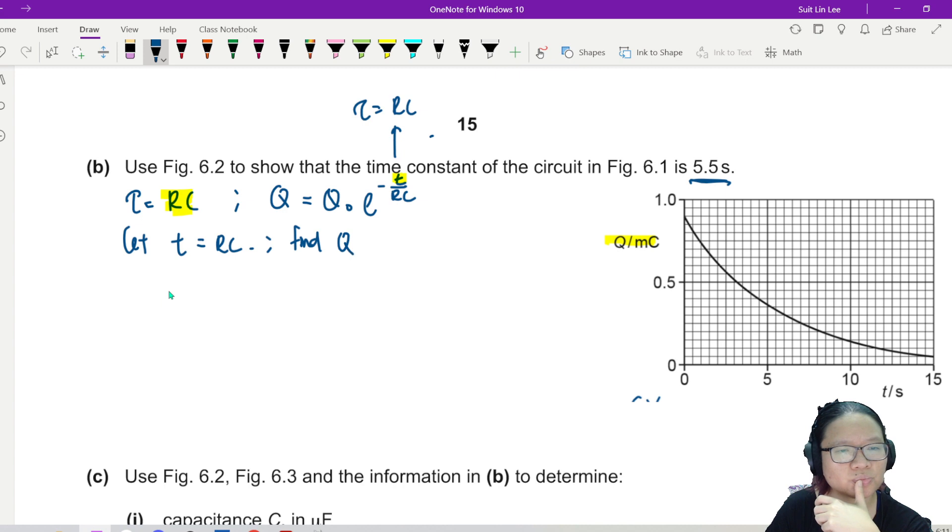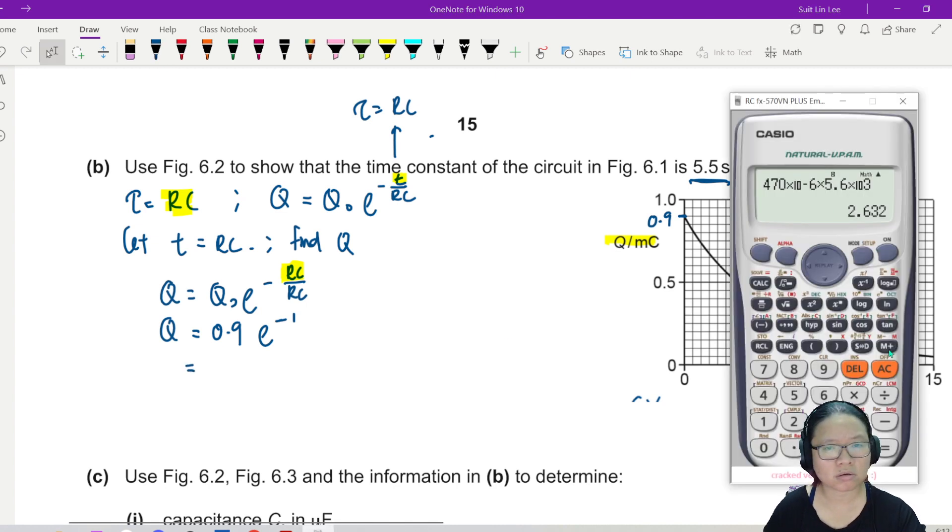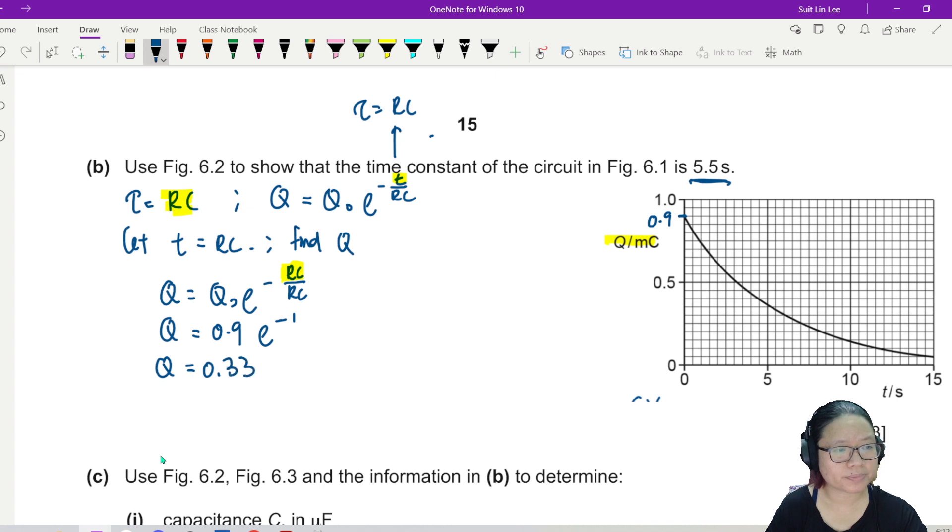And then I'm going to find Q. Because if I can find Q, let's say this is the Q that I want, then this will be RC. So I guess I need to find Q. So Q is equal to Q_0 e^(-RC/RC). So I substitute t as RC straight away. These can cancel out, which is very nice. Q_0 is here, and this one looks like 0.9 milliCoulombs. Q = 0.9 e^(-1) = 0.33.